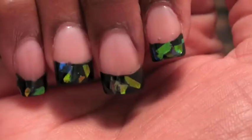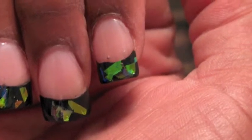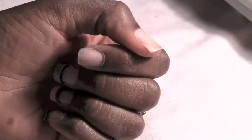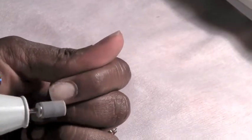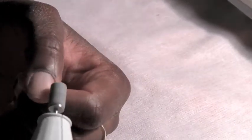This nail tutorial is on gel nails with mylar and black tips. First we're going to prep our natural nail using an electric file or a manual file. You're going to lightly buff the top of the nail to create a rough surface and remove the shiny top layer.